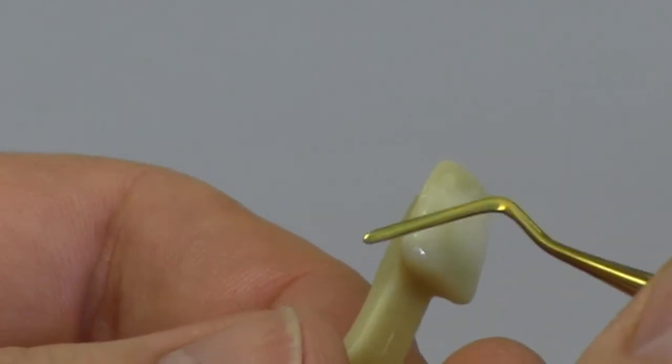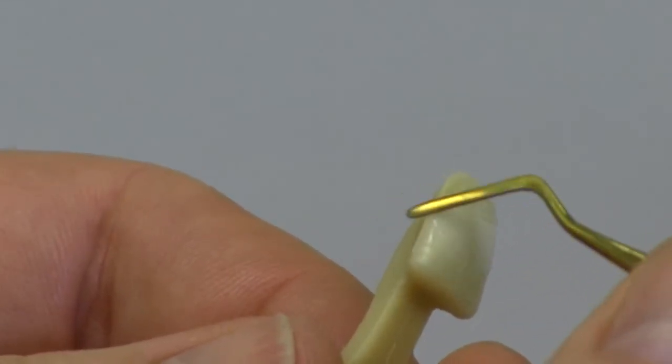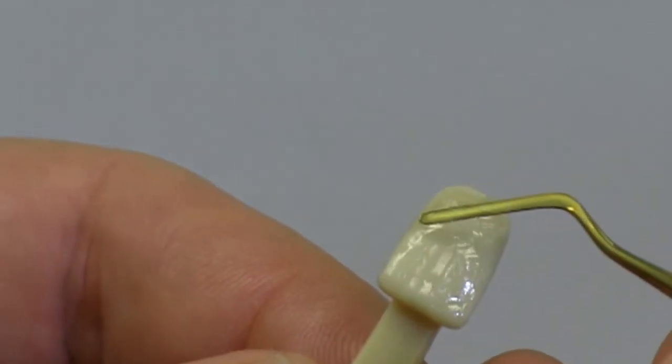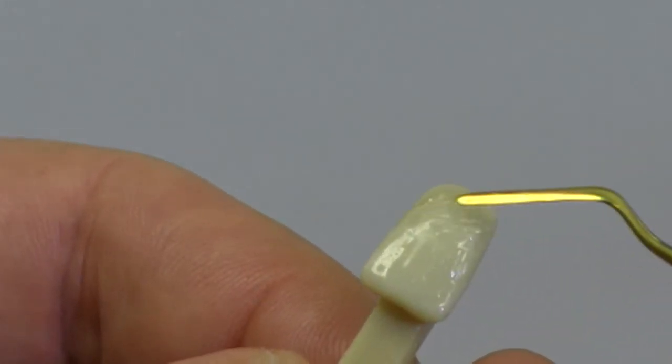If it's less than one millimeter thick, you're making that restoration much more likely to fracture, even under normal function.